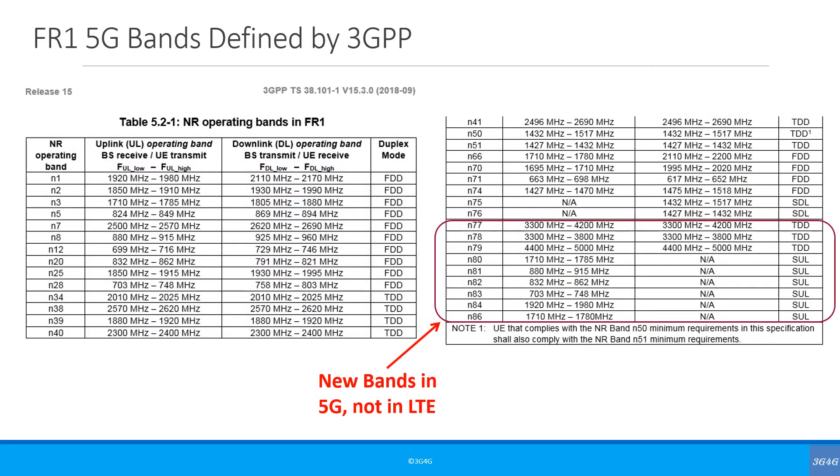If we look at the FR1 bands defined by 3GPP, we can see that while some of the bands are new, an operator is more than welcome to use any of the existing 3G or 4G bands for 5G. There are, of course, some new bands defined for 5G.